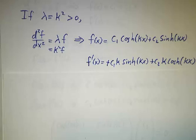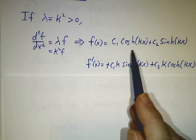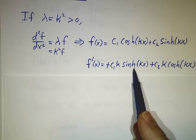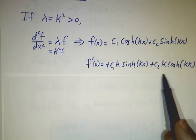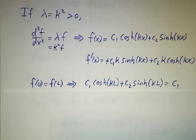And then, if you look at f', well, derivative of cosh is κ sinch. Derivative of sinch is κ cosh.